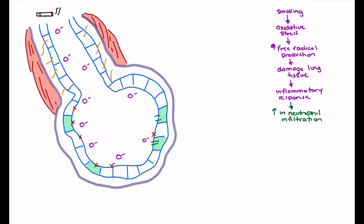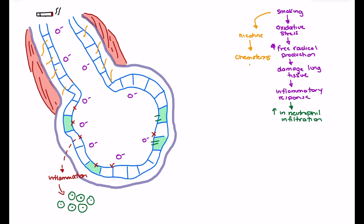As lung tissue damage activates our inflammatory response, one of the responses is going to be an increase in neutrophil production. What's interesting about smoking is that the nicotine within cigarette smoke actually leads to a chemotaxic effect — nicotine promotes the infiltration of neutrophils to the lungs, acting as a signal to pull those neutrophils in to where the damage is. So we see chemotaxis, meaning not only do we have increased neutrophil production but more neutrophils making their way to the lungs.